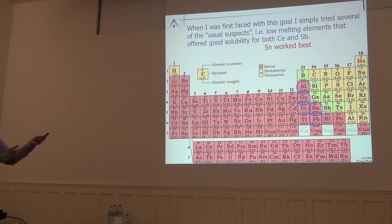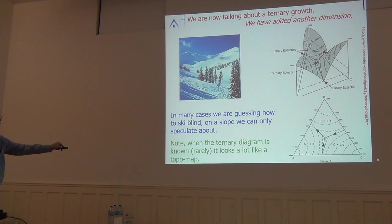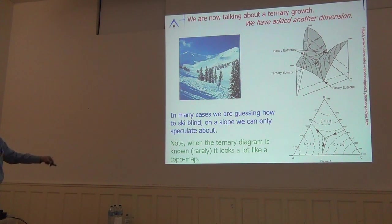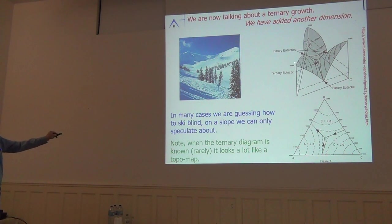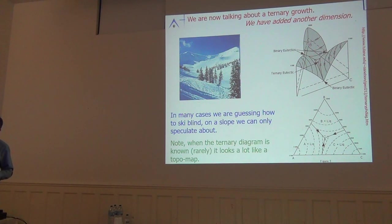Some of those other elements gave me new compounds I explored later. Now, this means we're dealing with a ternary phase diagram. In the abstract, a ternary phase diagram has elements A, B, and C on the corners; any position inside the triangle is a composition of A, B, and C. The liquidus line becomes a surface, and it ends up looking like a topological map. In most cases, the ternary phase diagram is not known — it's well known for steel or neodymium-iron-boron, but not for cerium-antimony-tin.